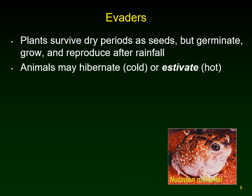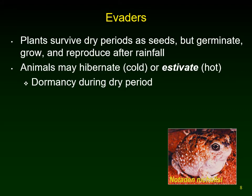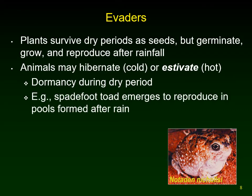Animals may hibernate if it's cold, or estivate if it's hot — digging down into burrows or down into the mud where ponds were when it did rain, essentially doing nothing until the next opportunity. This is a dormancy during the dry period. The spadefoot toad is one example: when it rains it emerges from the earth to reproduce, then crawls back into the mud and waits for the next rain.